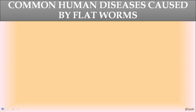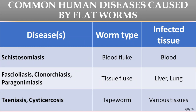Common human diseases caused by flatworms include schistosomiasis, caused by the blood fluke which infects blood tissue and damages blood cells. Other diseases are fascioliasis, clonorchiasis, and paragonimiasis, caused by tissue flukes that infect tissues of the liver, lungs, etc. Taeniasis and cysticercosis are caused by the tapeworm, which also damages various tissues.